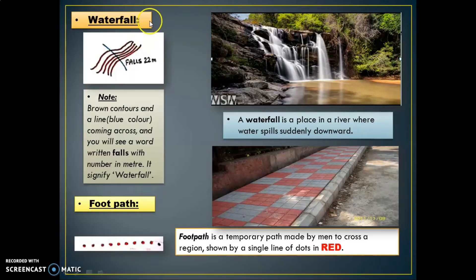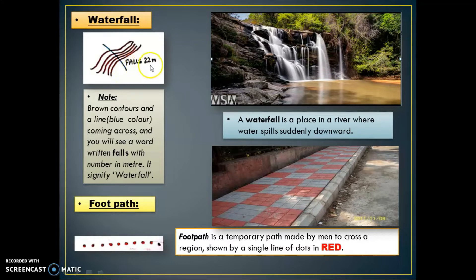The first topic is waterfall. A waterfall is a place in a river where water spills suddenly downward. If you see this symbol, you will notice brown contours with a blue line coming across, and the word 'falls' written with a number in meters — that number signifies the height of the fall, for example 22 meters.